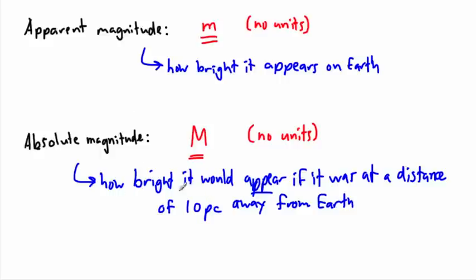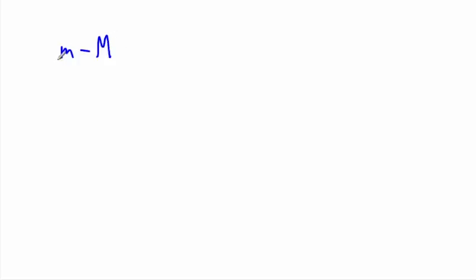What this means is: if we took all stars and placed them at the same distance, we could compare which ones are actually more luminous. The one that appears brighter would truly emit more light — more power, more energy per unit time. The equation we use is: little m minus capital M equals 5 times the log of D over 10, where D is the distance to the star in parsecs.